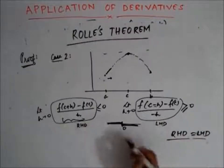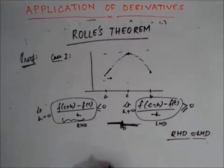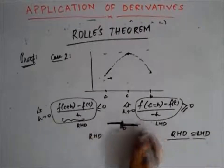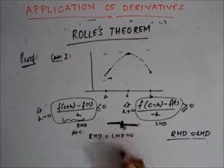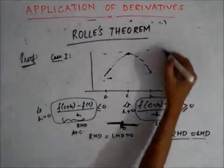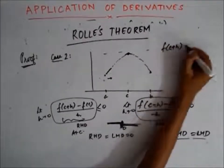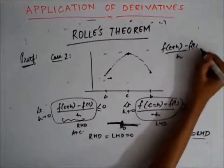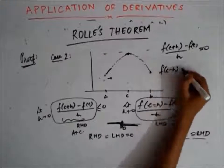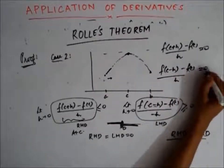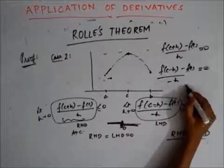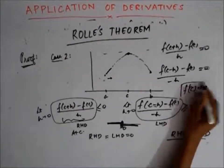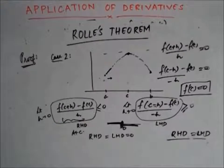Since the function is differentiable, the right-hand derivative must equal the left-hand derivative. But these two quantities are equal only at 0. Therefore, RHD at c equals LHD at c equals 0, which means f'(c) equals 0. Since f'(c) equals 0, we have proved Rolle's theorem.